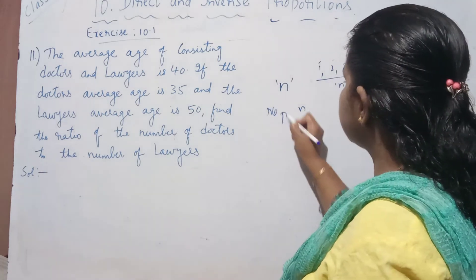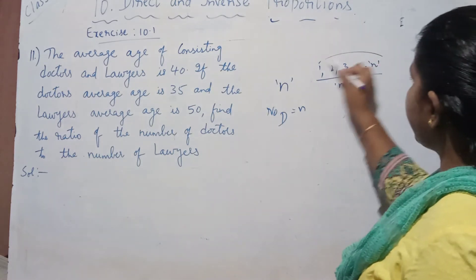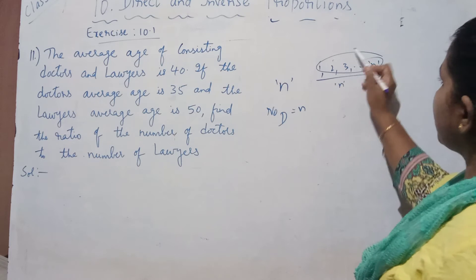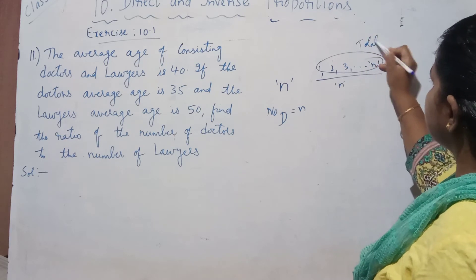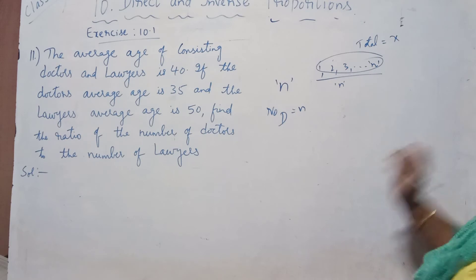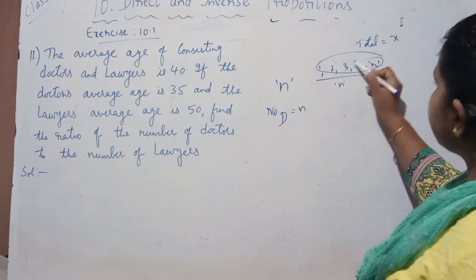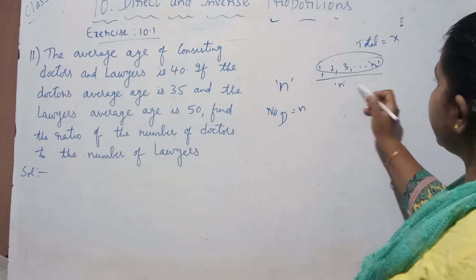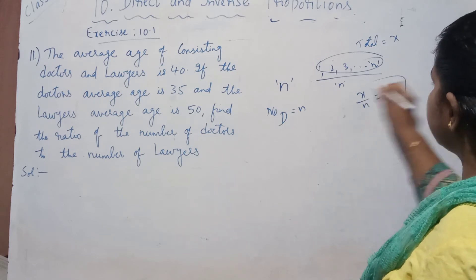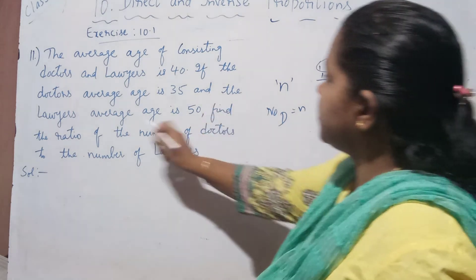The number of doctors is n. The total age of all the doctors — we don't know it, so we take it as x. So the average is total age divided by n, that is x by n, which is given as 35. We have got one condition from this.